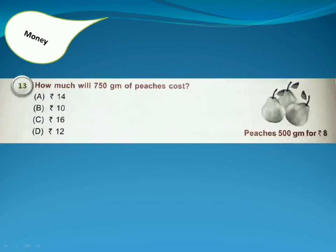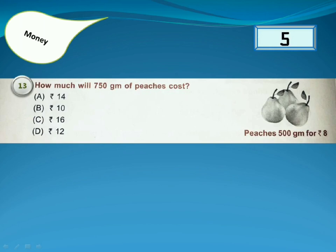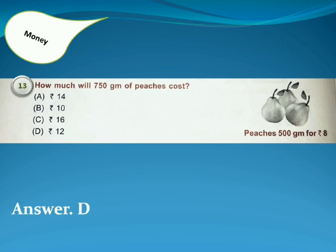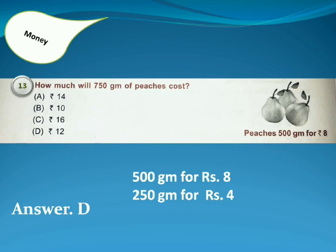How much will 750 grams of peaches cost? Answer is Option D. 500 grams is for 8 rupees. For 750 grams we need 250 grams more, which is half of 500. So 250 grams costs 4 rupees, and 750 grams will be for 12 rupees.